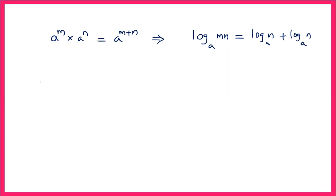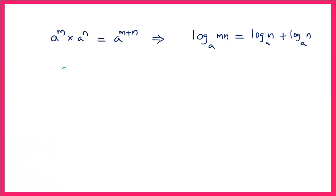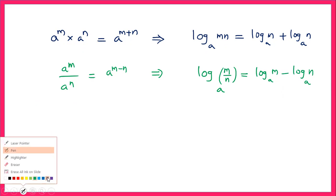Similarly, from another law of exponents, a power m divided by a power n equals a power m minus n. Applying this, we get a new law from logarithm: logarithm of m by n to the base a equals log m to the base a minus log n to the base a.